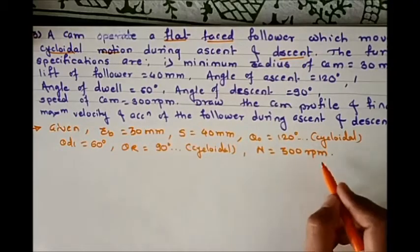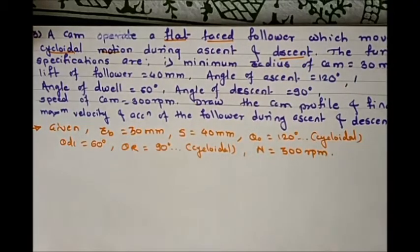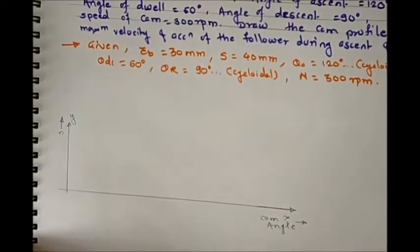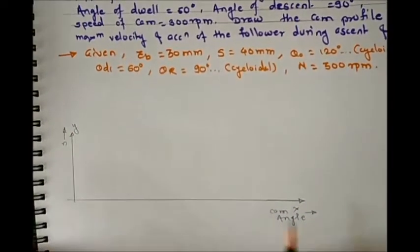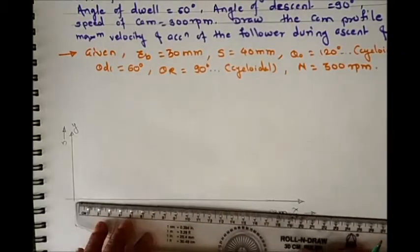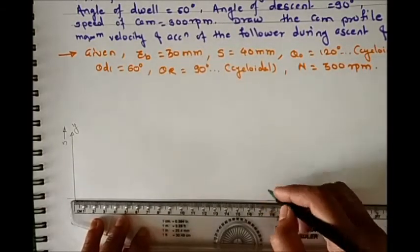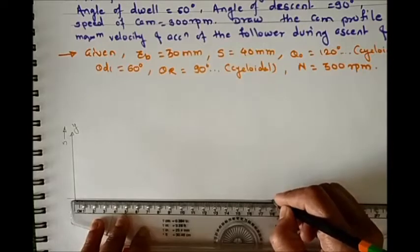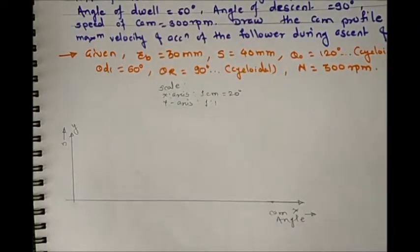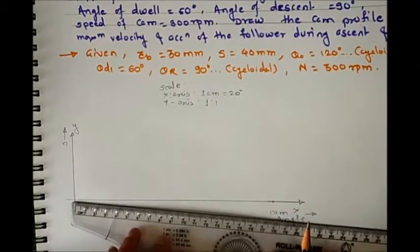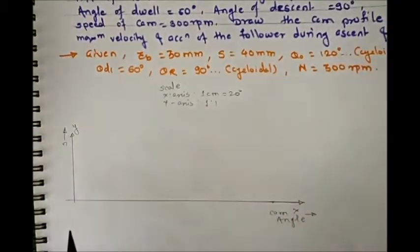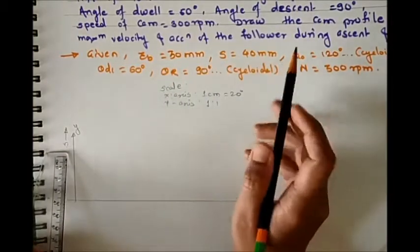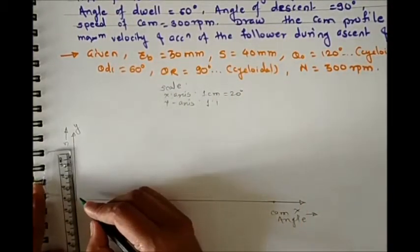The speed is given because we need to calculate omega while calculating maximum velocity. On the x-axis there is cam angle and on the y-axis the stroke length. The scale on x-axis is 1 cm equals 20 degrees, so total 360 degrees gives 18 cm. On the y-axis, scale is 1:1 because the stroke length is 40 mm, so we take 4 cm distance directly.